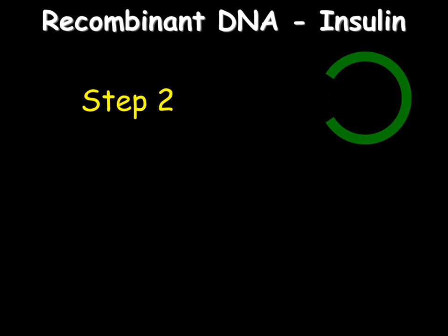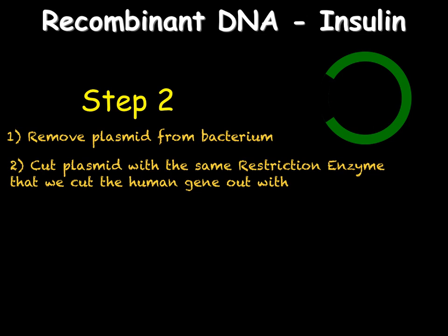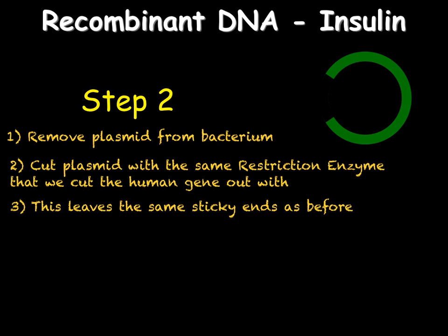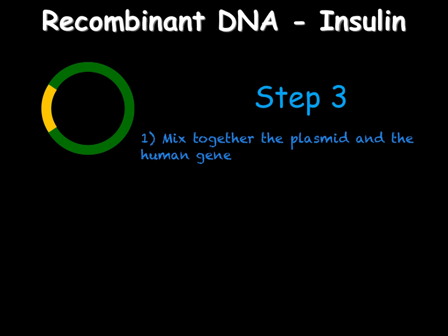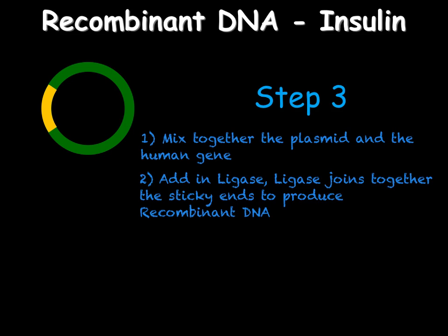Next we need our plasmid — a loop of DNA that exists in bacteria. We remove the plasmid from the bacterium and cut it open with the same restriction enzyme used to cut out the human insulin gene, giving it the same sticky ends. We then mix together the plasmid and the human gene and add DNA ligase, which sticks pieces of DNA together by joining the sticky ends. This creates recombinant DNA — two different pieces of DNA that have been joined together.